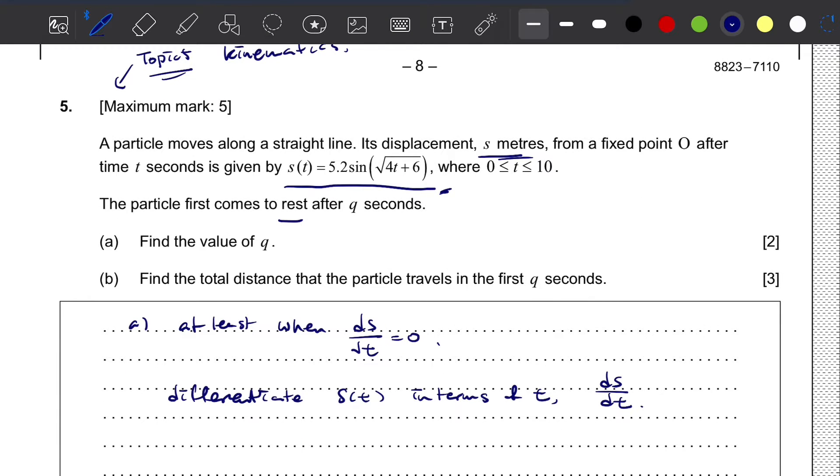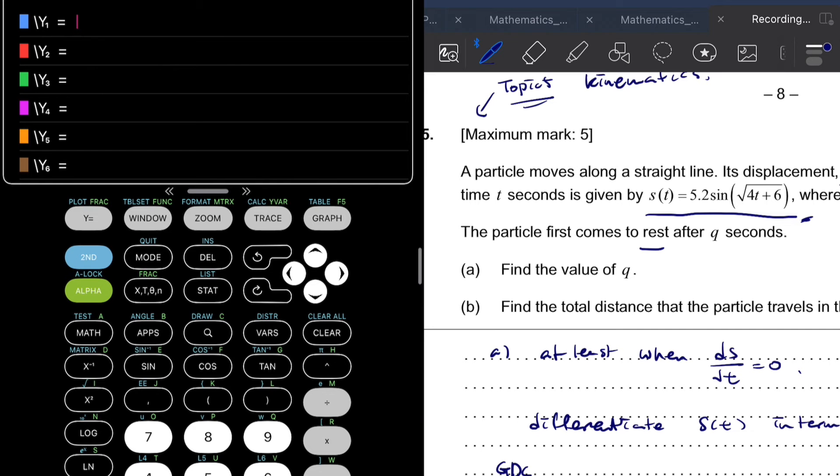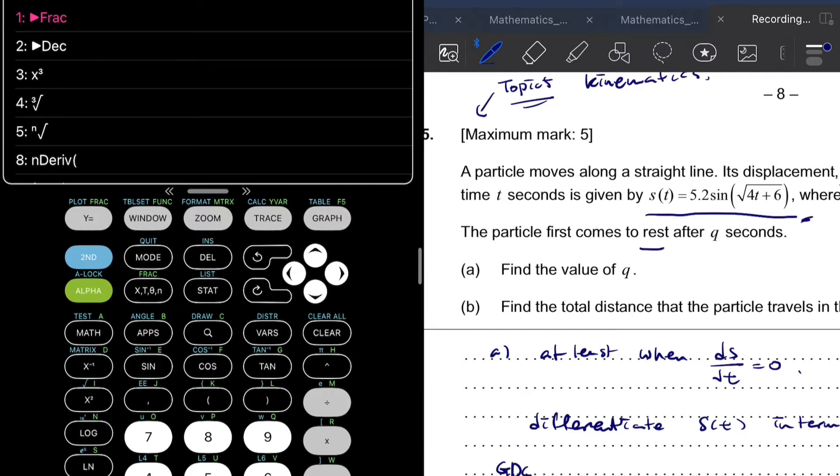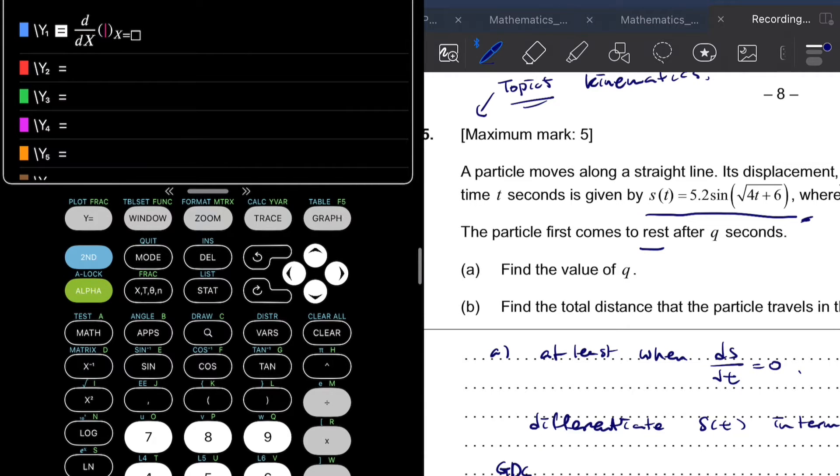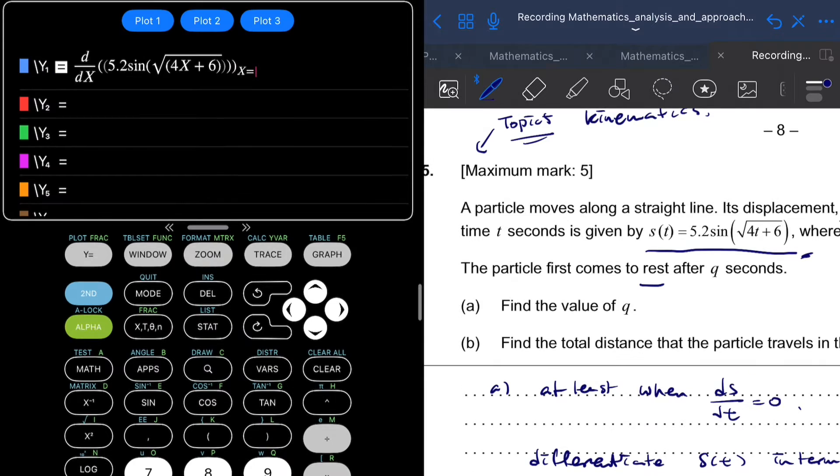Since this is a GDC question, we're going to use the GDC to solve it. What we're going to do is go to mathematics, then go to derivative, and type in our equation there. So 5.2 sin square root of 4x - I'm using x instead of t - plus 6, and then close the bracket. Then you're going to substitute x here and graph it.